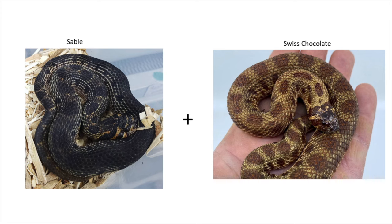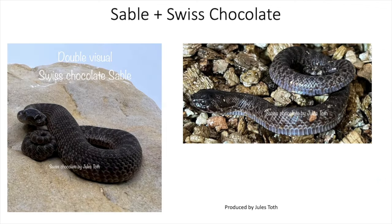Next up is sable and swiss chocolate. I didn't realize this combination existed until I did research for this video. This is what it looks like — the double visual swiss chocolate sable by Jules Tote. I'm not sure if he named it, but I think dark chocolate would be the perfect name for this combination. I've seen pictures of other swiss chocolates that were jet black, so I'm not sure how you'd distinguish a regular swiss chocolate from the swiss chocolate sable combination.